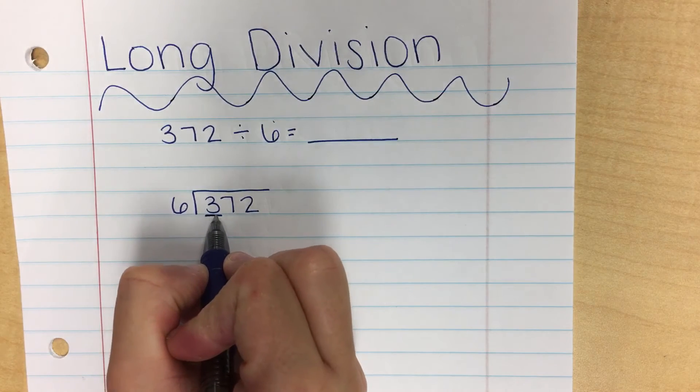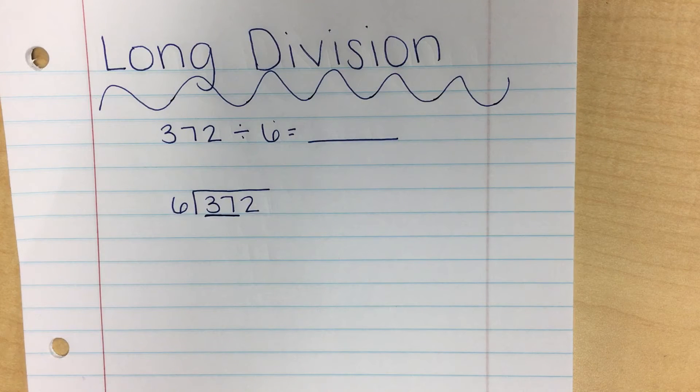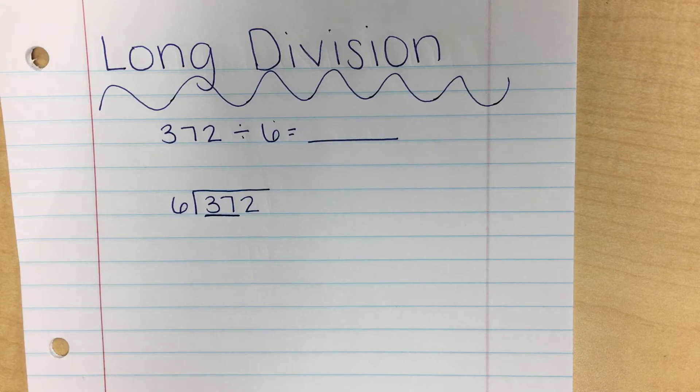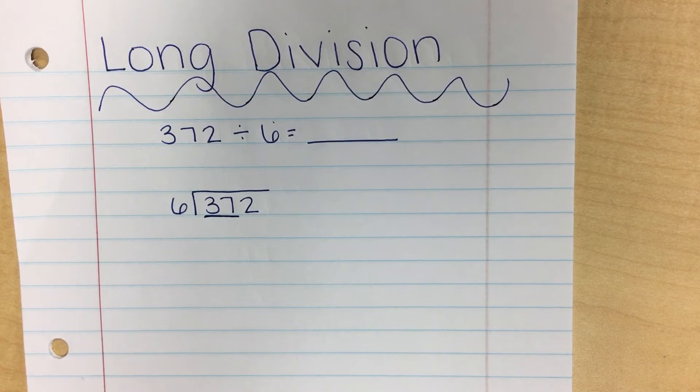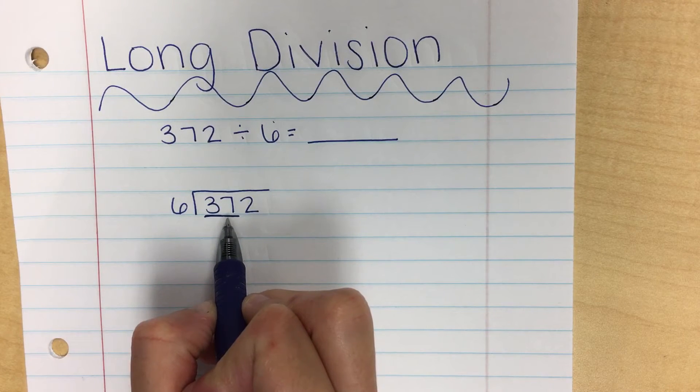So now we're going to go to the next number, and that number becomes 37. So now we need to figure out how many times can 6 go into 37. If you said 6 times, you are correct. So 6 will go into 37 6 times.